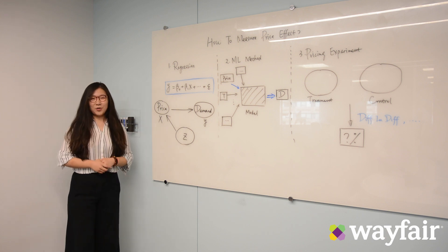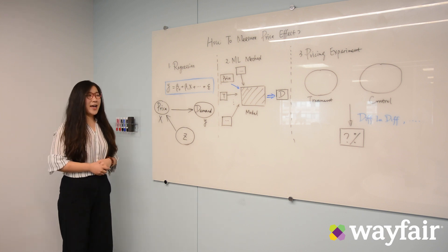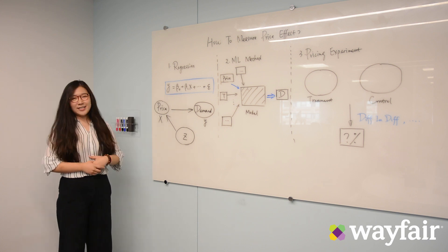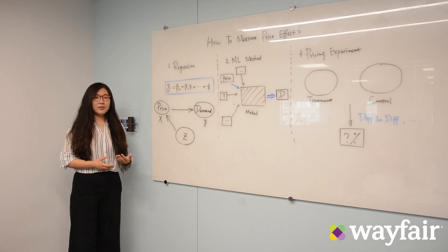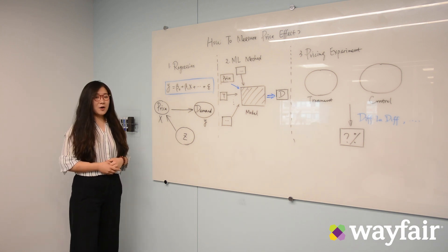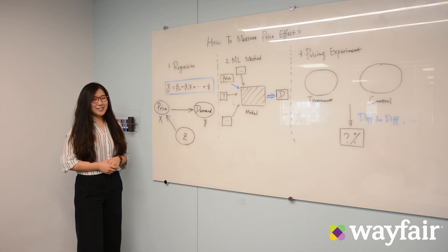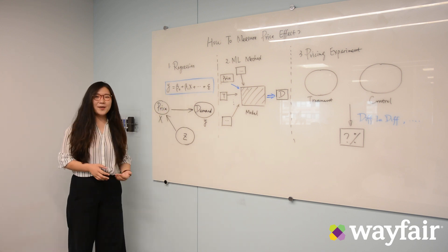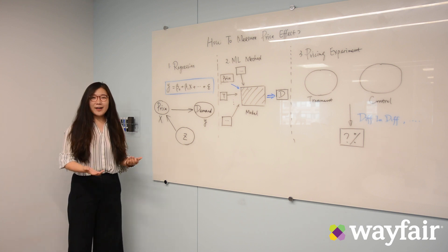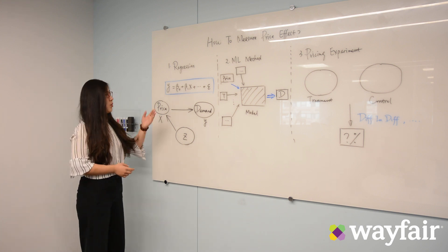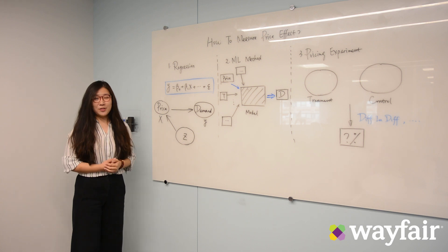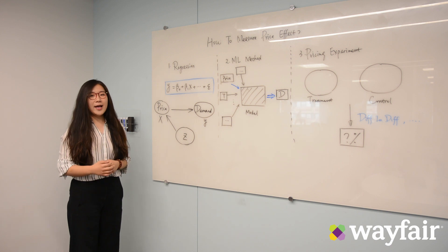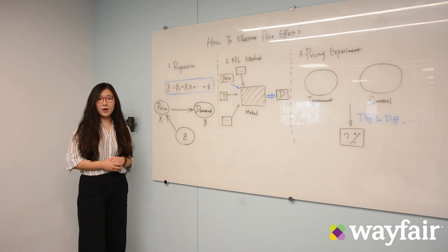The first way is regression — the most classic way to do that, as you may know from textbooks of economics. The Y here can stand for the demand, the revenue, or other business metrics we care about. The X here stands for the price effect, and we also want to control for other factors like time, the catalog, or the supplier. We run this regression and solve the problem, but it is usually hard to capture all the complex interactions with all the factors in the real world.